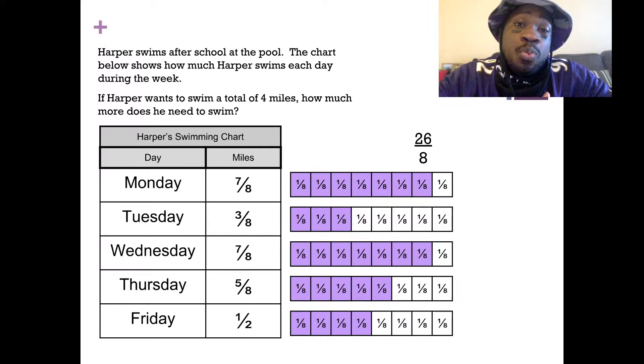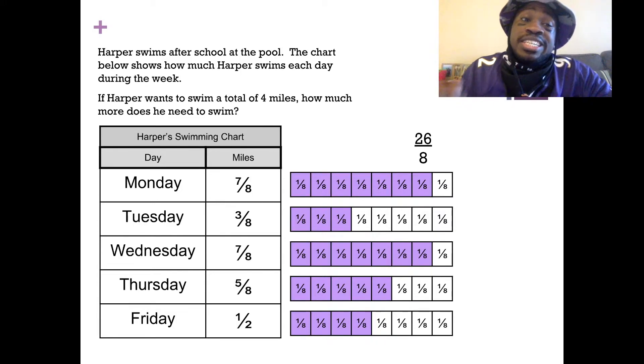Now, obviously, that's way more than one mile because we know eight-eighths would be one mile and he almost swam one mile on Monday alone. In the next video, we're going to figure out what we need to do with this fraction because, again, this is not our answer. The question asks how much more does he need to swim, not how much did he swim already? This is just how much he swam so far.